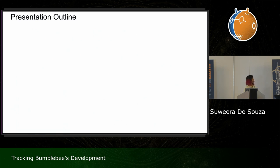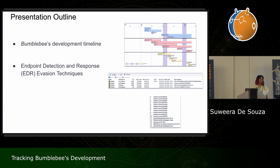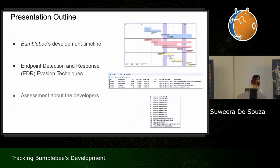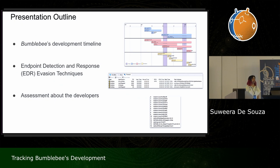Our talk today will be quite technical in nature. We're going to look at timelines on the development of different Bumblebee components. And what we'll notice is that the developers like to focus on a lot of EDR evasion techniques, some of which are worth mentioning. We'll conclude by drawing conclusions based on observing these timelines — what can we learn about Bumblebee's developers?